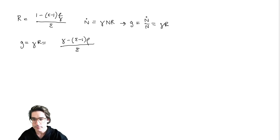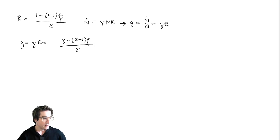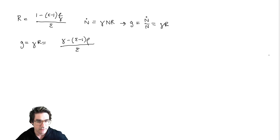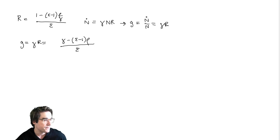So then we just get G equals gamma R, which is then gamma minus epsilon minus one times rho, all over epsilon. So we can start working backwards once we do that. That's the growth rate of N. We may also want to know the growth rate of output.